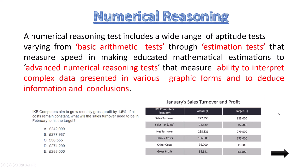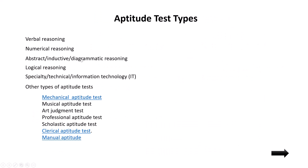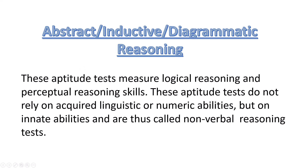Abstract, inductive, and diagrammatic reasoning are relatively the same. These tests measure logical reasoning and perceptual reasoning skills — understanding how a person understands situations. These aptitude tests do not rely on linguistic or numerical abilities; no language or number-related questions are asked. Other than linguistic and numerical, they assess abstract, inductive, or diagrammatic reasoning.